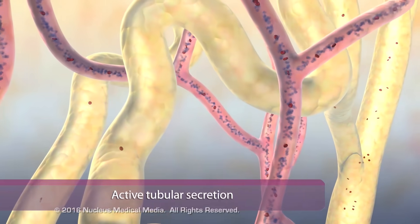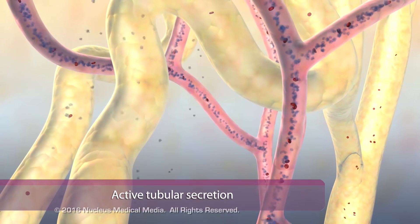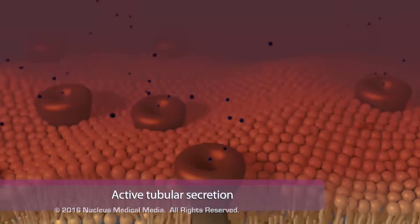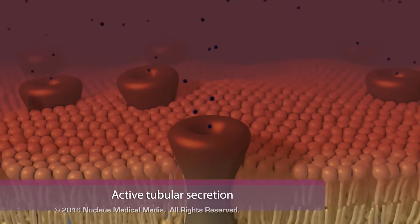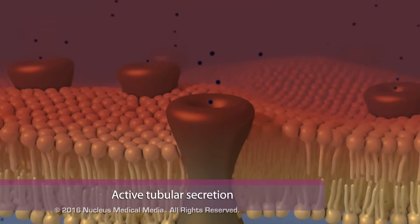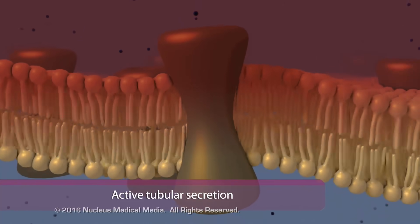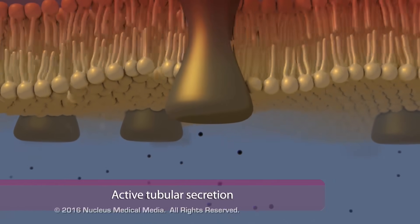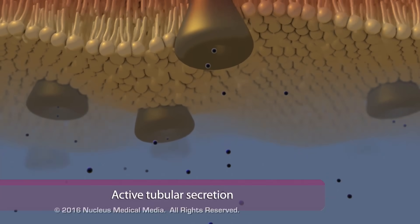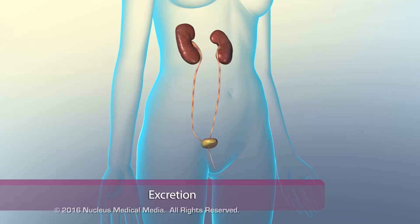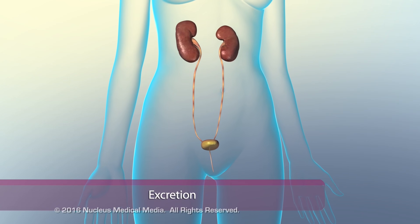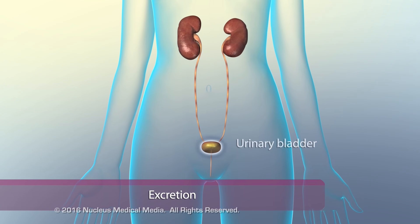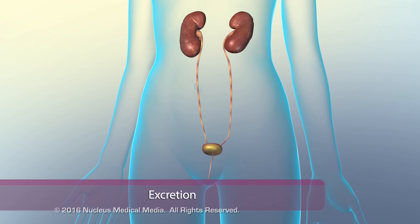Some drugs are not filtered from the blood via the glomerulus. Instead, special anionic and cationic pumps in the walls of the renal tubule actively transport the drugs from the blood into the tubules and collecting duct. Urine from the collecting ducts travels through the ureters, where it is collected and stored in the urinary bladder until elimination from the body.